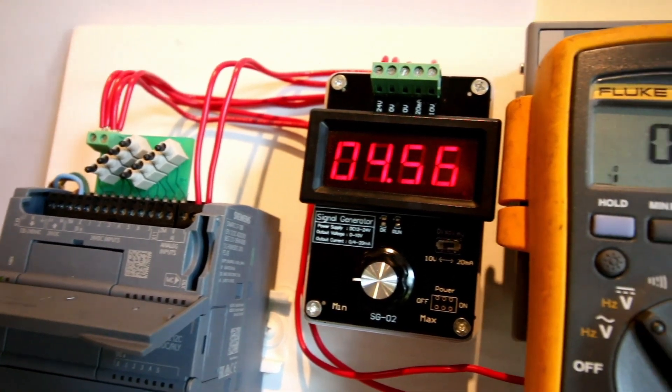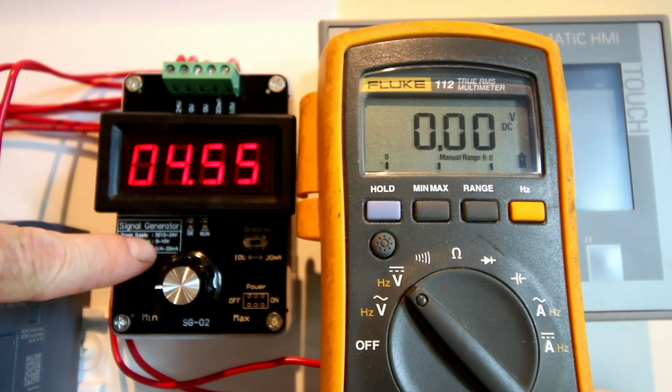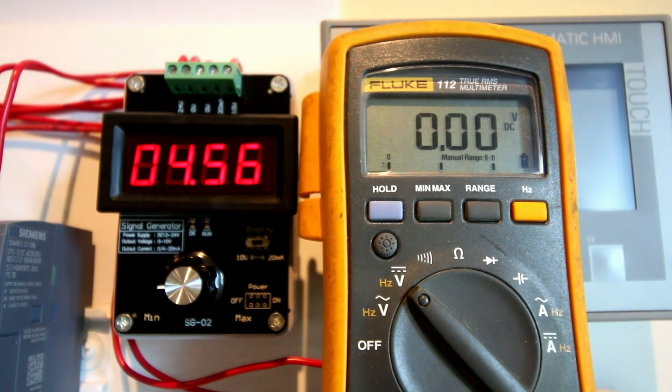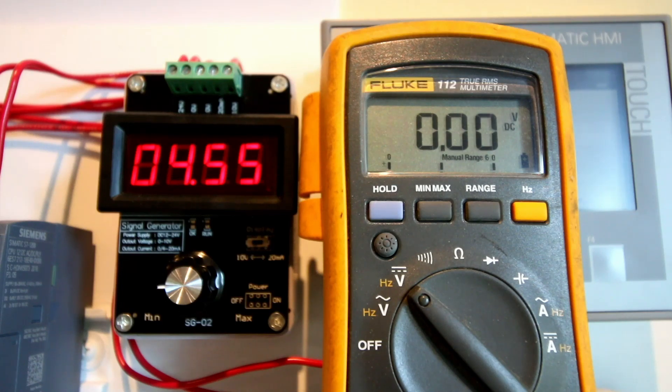So if you stick around on the playlist on the next video, I'm going to be taking this 0 to 10 volt signal that we're going to see on the signal generator. I'm going to be punching that into my TIA portal and I'm going to be making use of the normX and scaleX functions in order to display exactly what voltage we're seeing here on this digital display.